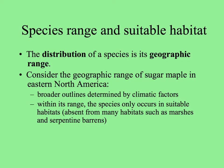If we consider the range of any plant in North America, the broader outlines of where it occurs are determined by climatic factors. Some plants tolerate freezing, others do not. Some need moisture, some need drier conditions. But within that range, the species can only be found in habitat patches suitable for its existence. For example, for the sugar maple, it's in upland forest and absent from wetter environments or rocky outcrops.